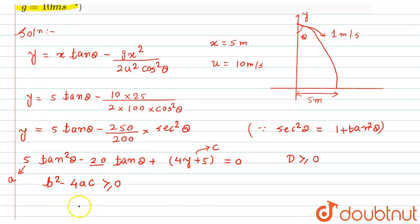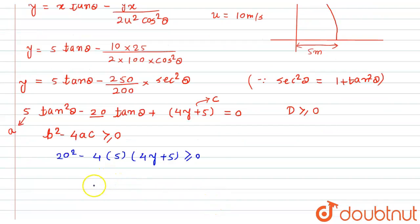according to this, the discriminant b² = 20² - 4(5)(4y + 5) should be ≥ 0. After simplifying, we get